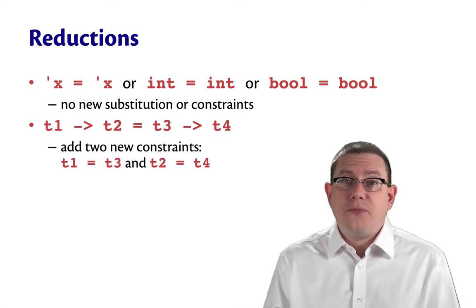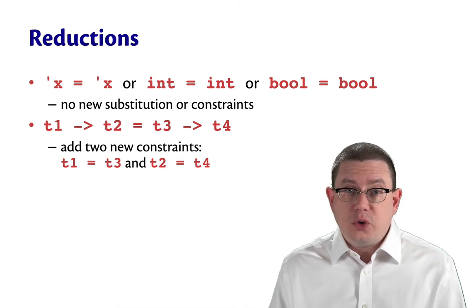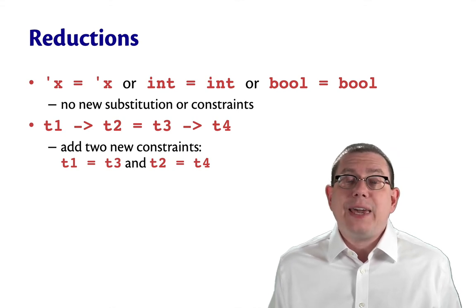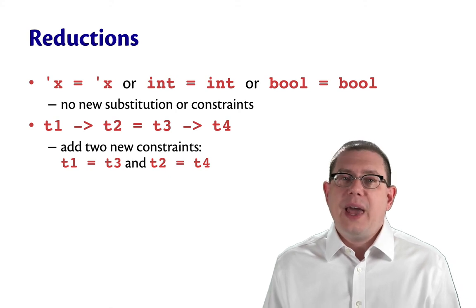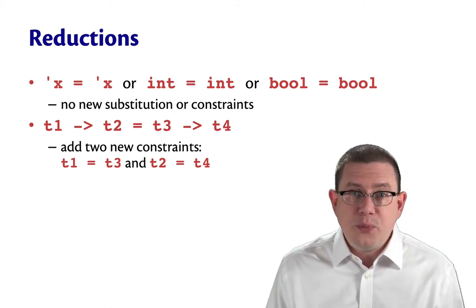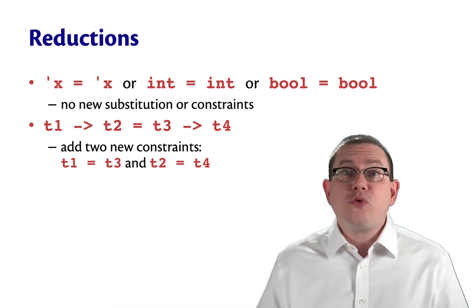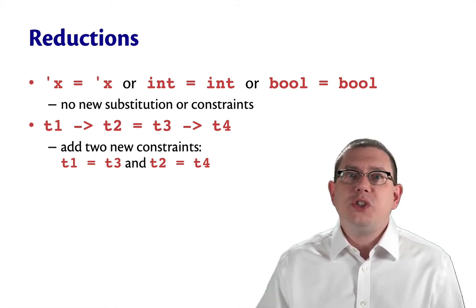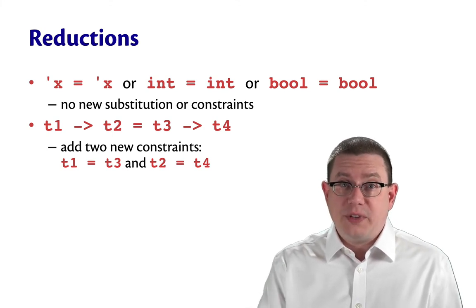More interesting is if we get a function type equal to another function type. So T1 arrow T2 equals T3 arrow T4 — we throw that constraint out and add back two simpler constraints: that T1 equals T3 and T2 equals T4. The input types on both arrows are equal and the output types are equal. We're making progress toward termination because even though we're adding two constraints back in, each of them is a smaller constraint in terms of the shape of the types.